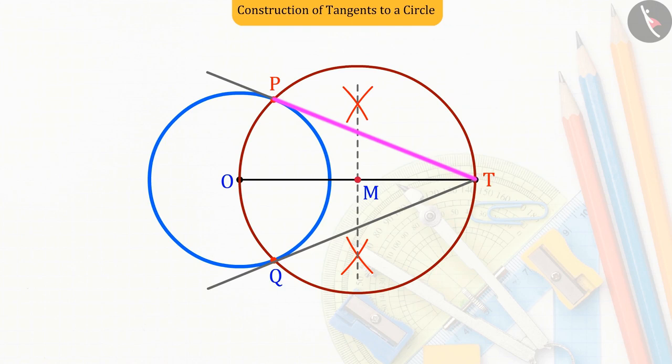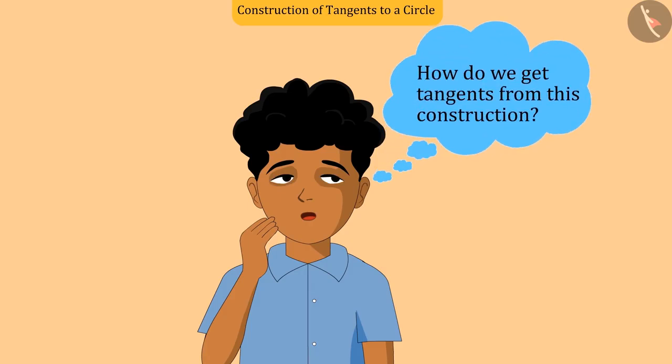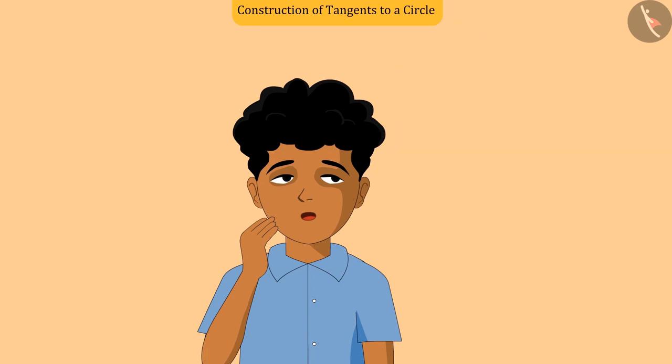Now we will find out using the properties of tangents whether the two lines PT and QT are tangents to the circle. Let's see how.